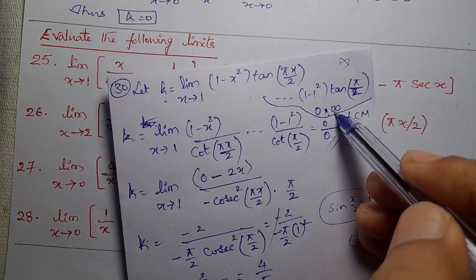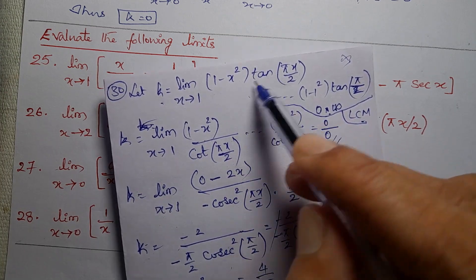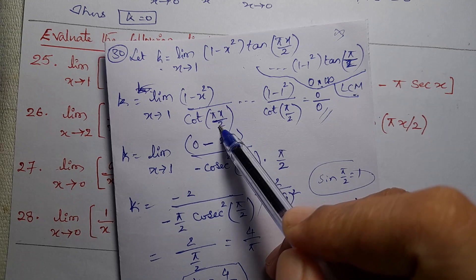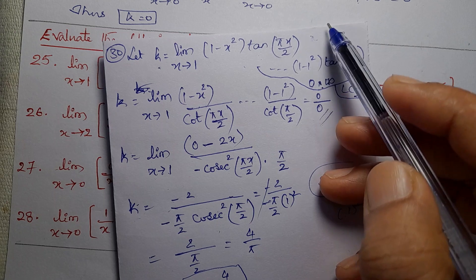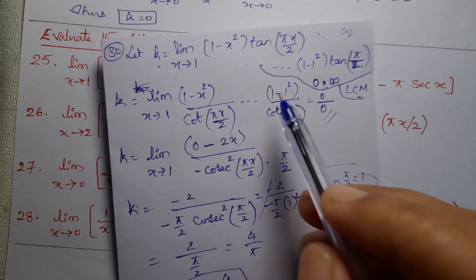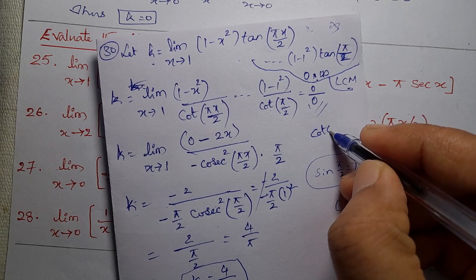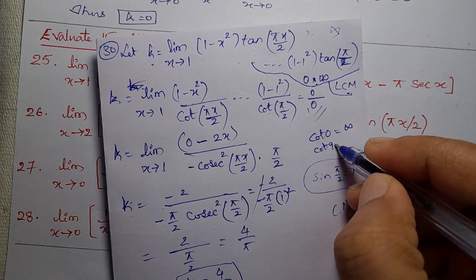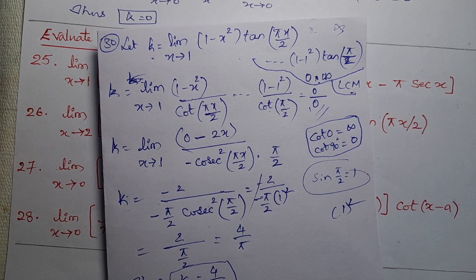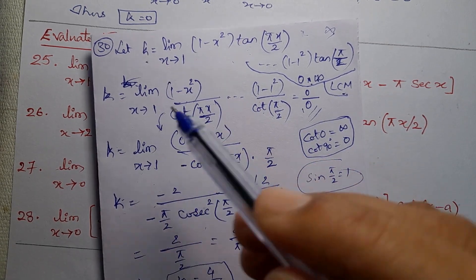So when we directly put x equal to 1, this format is 0 times infinity. This is the form where we use LCM. Since this is a multiplication function, if we use tan, we use tan as a reciprocal — tan as the denominator. So the reciprocal of tan is cot; 1/infinity is 0, and cot(90°) = 0. So this gives 0/0 form, and L'Hôpital's Rule applies.